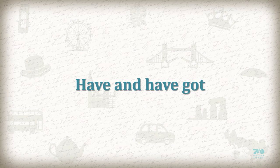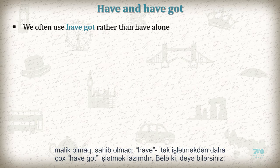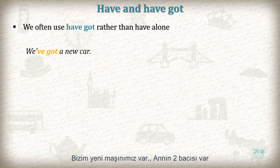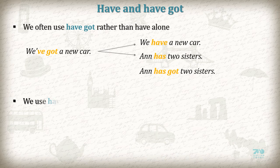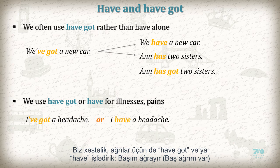Have and have got. Have and have got means possess, own, etc. We often use have got rather than have alone. So you can say: We have got a new car, or We have a new car. Anne has got two sisters, or Anne has two sisters. We use have got or have for illnesses, pains, etc. I have got a headache, or I have a headache.